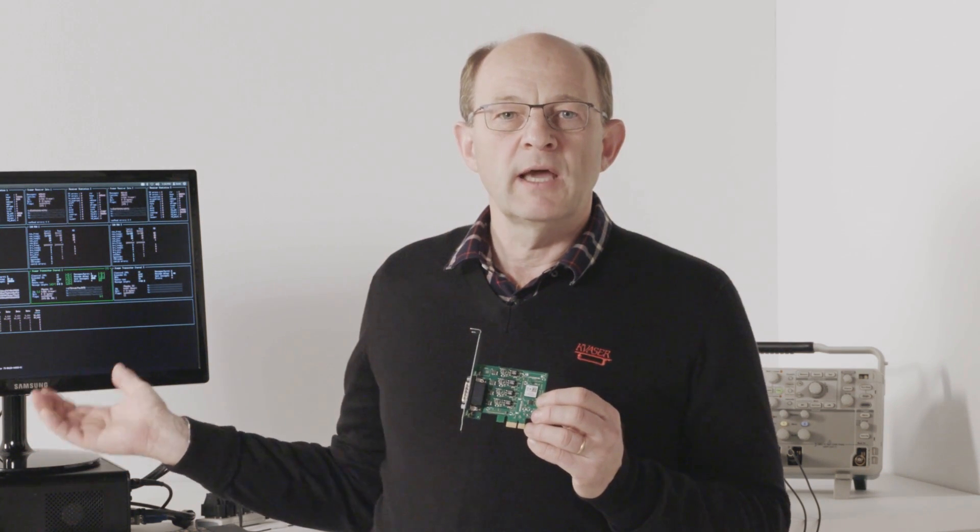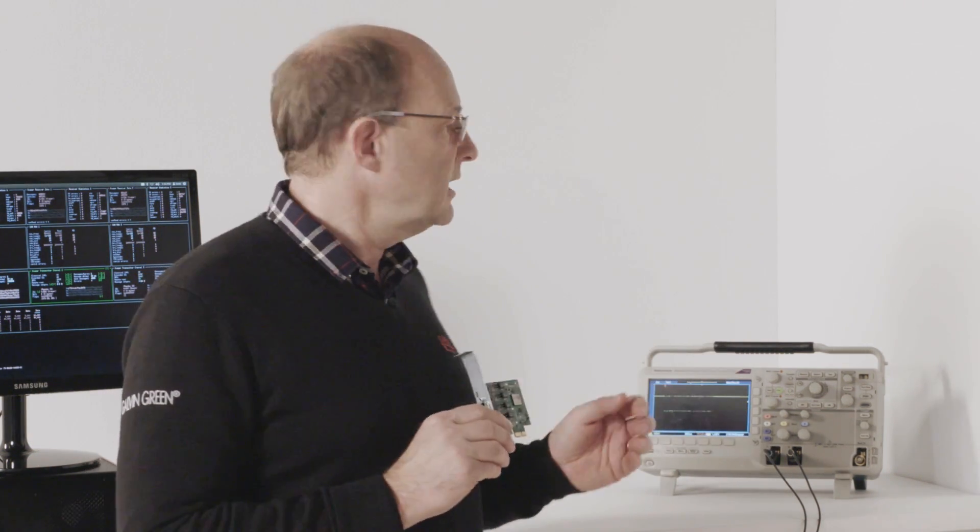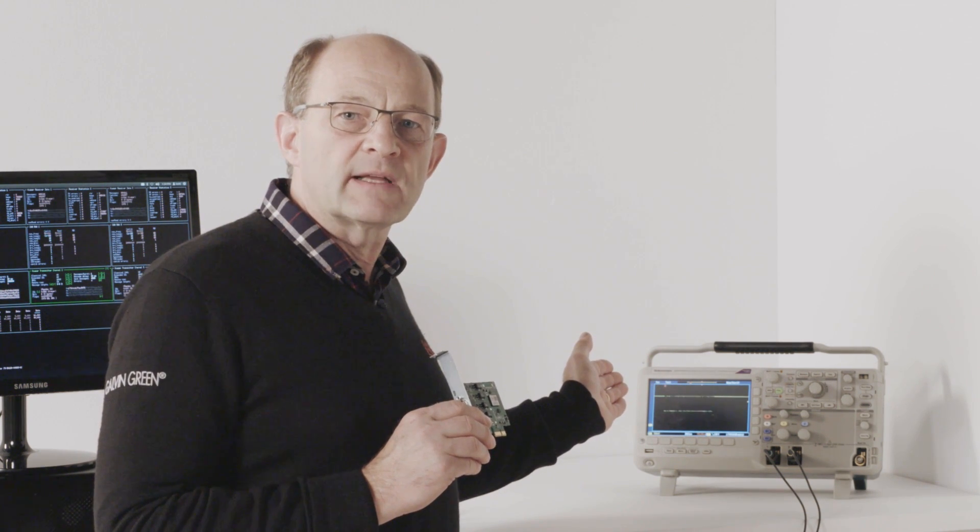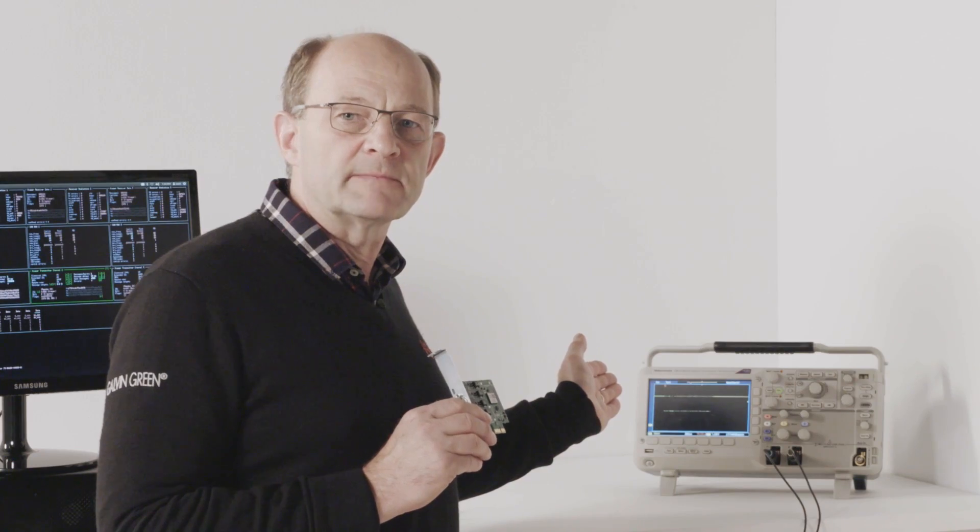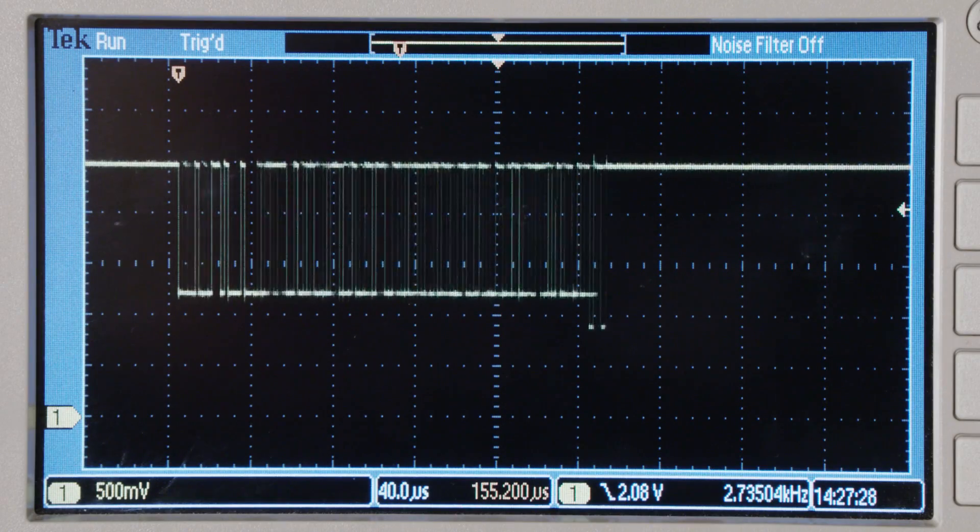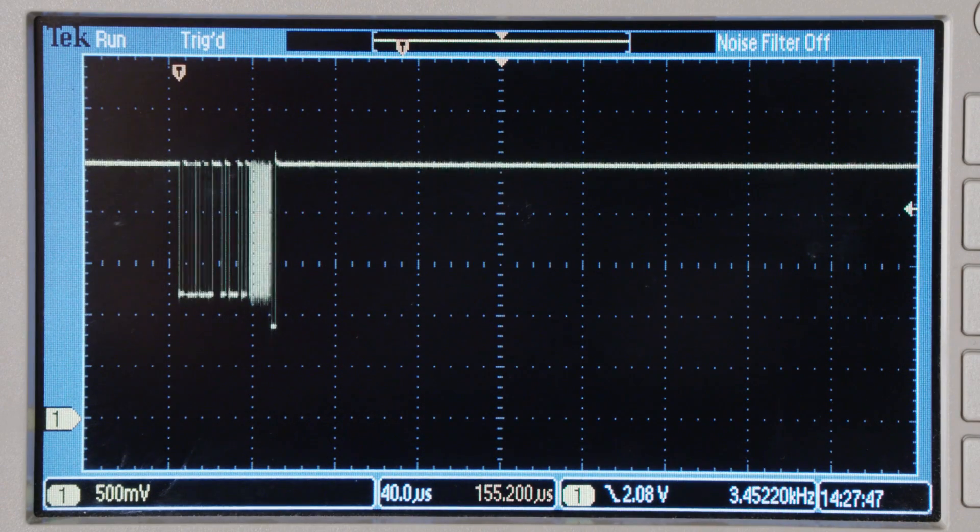The bus from that application is connected to the oscilloscope over here, where we can see a classical CAN frame with 8 bytes of data. If we switch to CAN-FD, we will see that the length of the message decreases to 20% of the classical CAN frame.